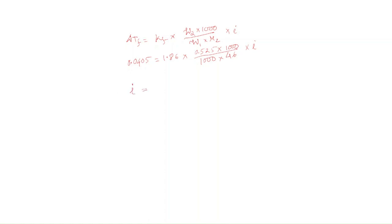The value of i = (0.0405 × 1000 × 46) / (1.86 × 0.525 × 1000) = 1.9.